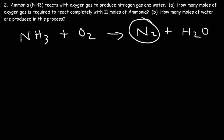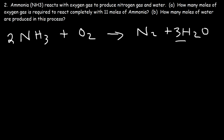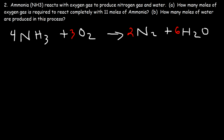To balance the equation, we see two nitrogen atoms on the right side, suggesting a 2 in front of NH₃, giving 6 hydrogen atoms, so we try a 3 in front of water. But that gives an odd number of oxygen atoms, requiring a fraction in front of O₂. To avoid fractions, we double everything: put a 4 in front of NH₃, a 2 in front of N₂, and 12 hydrogens divided by 2 gives a 6 in front of H₂O. We then need a 3 in front of O₂ because 3 times 2 is 6. Now everything is balanced.